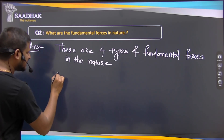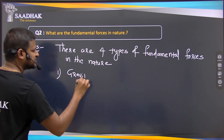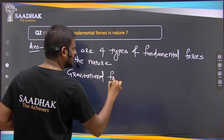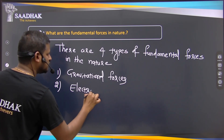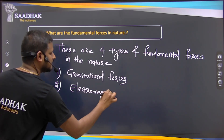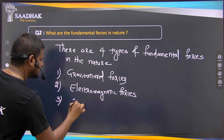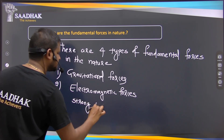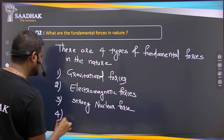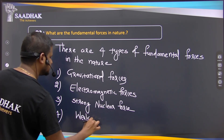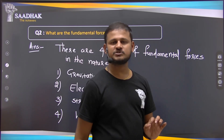The first one is the gravitational force. The second one is the electromagnetic force. The third one is the strong nuclear force. And the fourth one is the weak nuclear force. These are the four fundamental forces of nature.